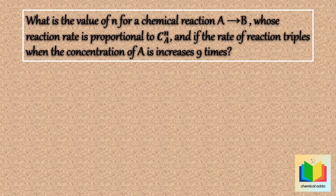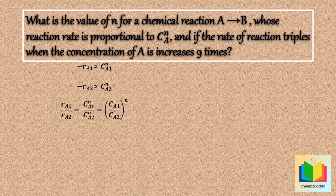Given: reaction rate is proportional to cA raised to n. For the initial condition, the rate of reaction can be written as: minus rA1 is directly proportional to cA1 raised to n. For the second condition: minus rA2 is directly proportional to cA2 raised to n. If we divide the first condition rate by the second condition rate, we get rA1 divided by rA2 equal to cA1 raised to n divided by cA2 raised to n, which can be written as cA1 divided by cA2, whole raised to n.